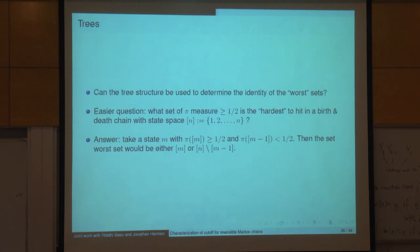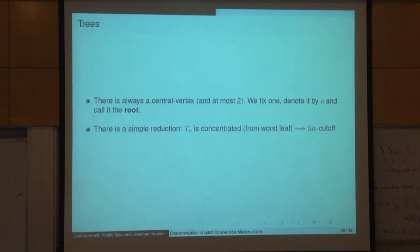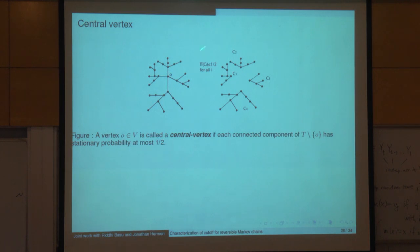Tree structure can be used to determine the identity of the worst sets to hit. A vertex is called central if, when you remove it from a tree, the resulting components are all less than half the volume of the tree (computed using π). There always is a central vertex, and there are always at most two — this is a nice combinatorics exercise.